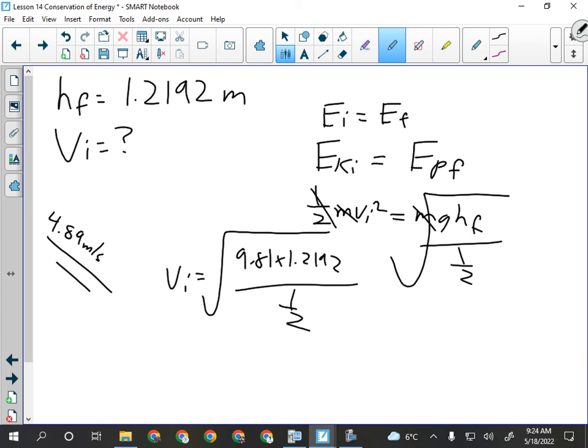So, vi is going to be 9.81 times 1.2192 m, divided by one-half, square rooted. 4.89 meters per second, straight up. Obviously, if you're running in a straight line, you can run way faster than that. But to jump and propel yourself directly against gravity at that speed is a feat.